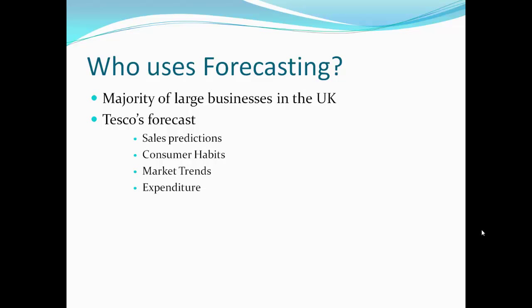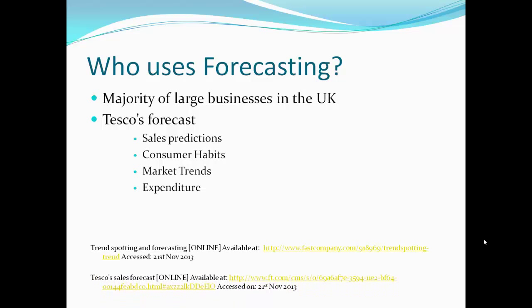Tesco uses a variety of ways to forecast sales, using forecasting economy and different methods to help the business do better in the future. Tesco uses sales forecasts specifically to predict consumer sales so they know exactly how much demand to supply to the customers. This saves the business money and can also help create budgets. This will also help the business directly in the future if trend spotting is used to predict what the customers' wants and needs are.